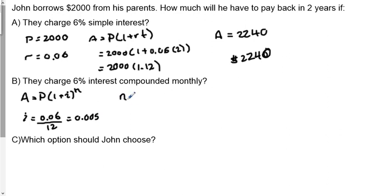n is the number of times it's compounded. So we have 12 compounding periods and two years, so n is 24. Using that function, we have A equals $2,000 borrowed multiplied by 1 plus 0.005 to the 24.